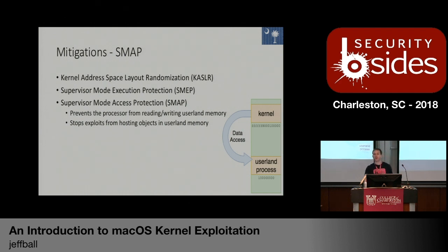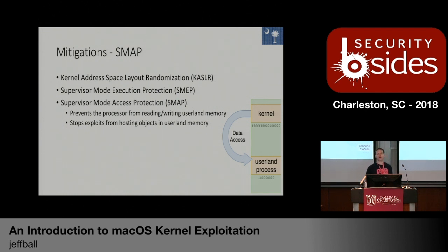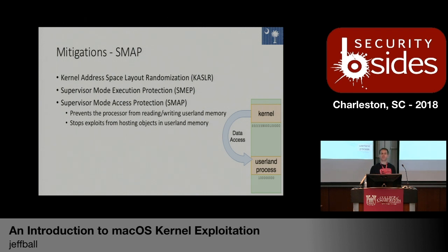The next mitigation is Supervisor Mode Access Protection (SMAP), another Intel processor feature present only on later 2016 and newer MacBook models. It's similar to SMEP except it applies to reading and writing memory from userland — the kernel will refuse to read or write memory directly from userland. macOS selectively turns it on and off; if you're not using one of the specific copy functions for userland data, SMAP protection is on. This means if a vulnerability lets you dereference an arbitrary address, you can't host that data in userland — you need to get it into kernel memory somehow.